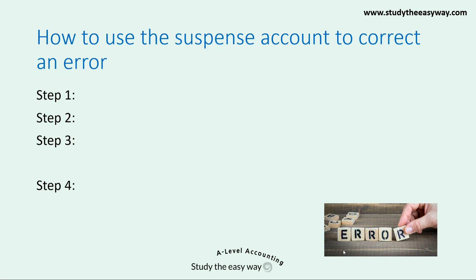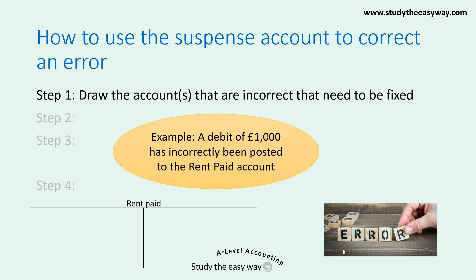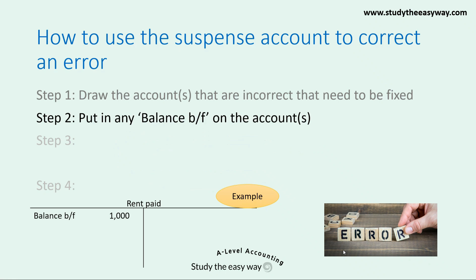Now let's discuss how to use the suspense account to correct an error using a general example. Step one is to draw the account or accounts that are incorrect and need to be fixed. Here, a debit of £1,000 has incorrectly been posted to the rent paid account, so I've drawn that T account. In step two we put in any balance brought forward — the £1,000 debit which was incorrect is already recorded, labelled as balance brought forward to indicate it has already been posted and will need to be corrected.